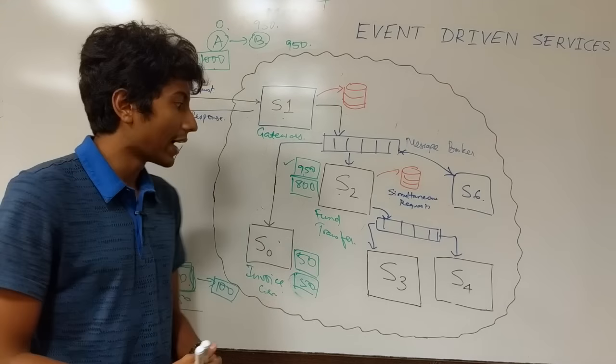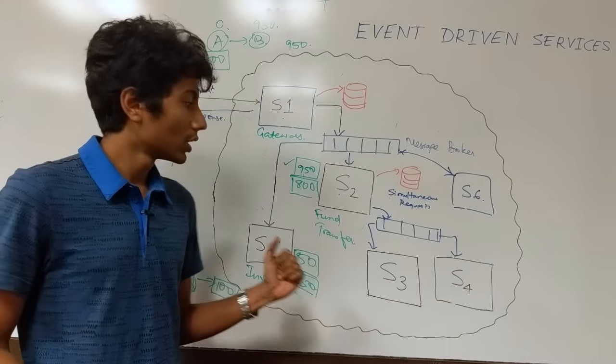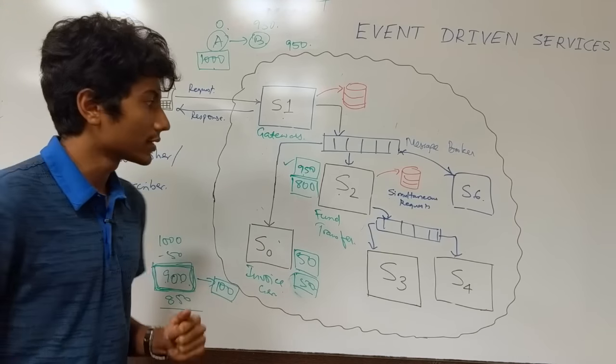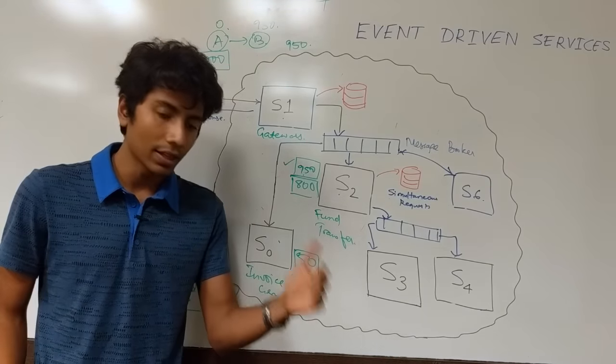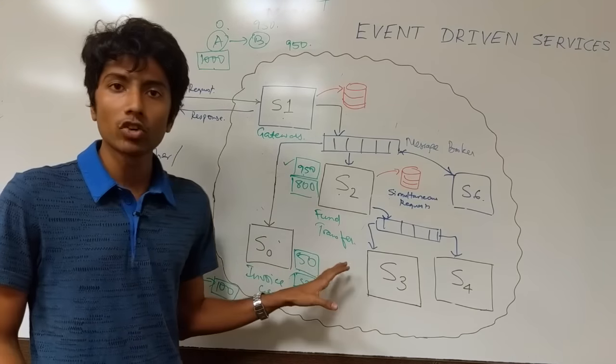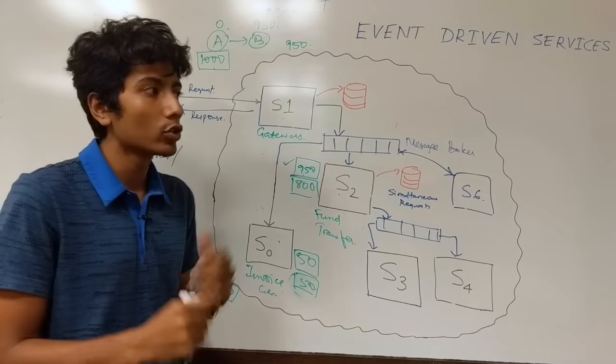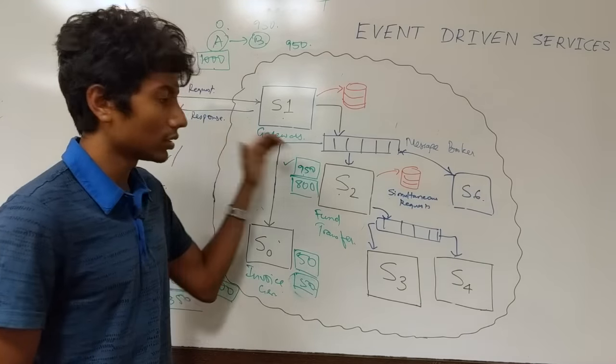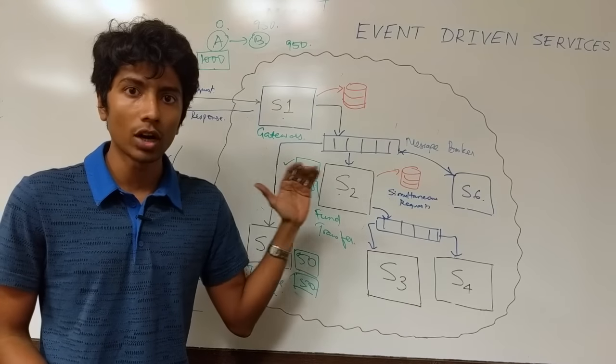All this could have been avoided had you not had a transaction across services. And there are ways that you can avoid this which we'll be discussing in the next session on consistency. But this is a major drawback of this kind of architecture. You can't use it for mission critical systems where either there's a success or a failure. Like there's no atomicity in this.